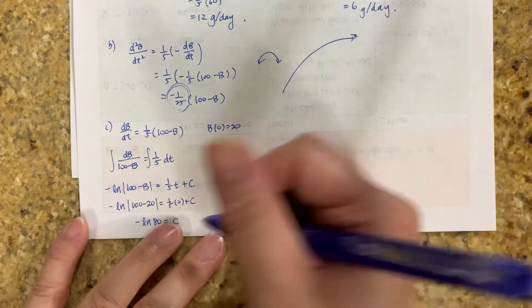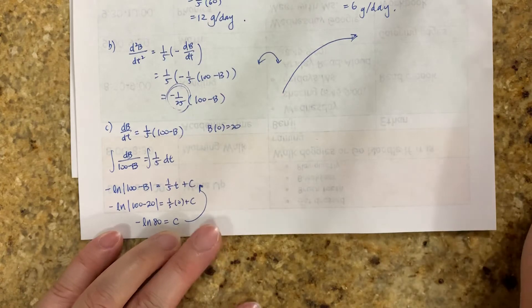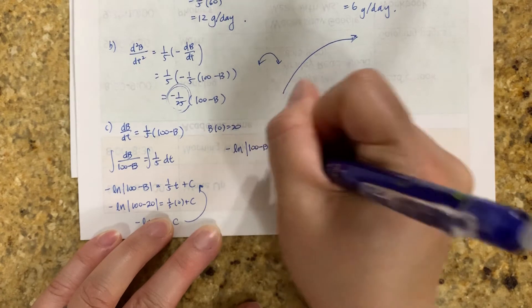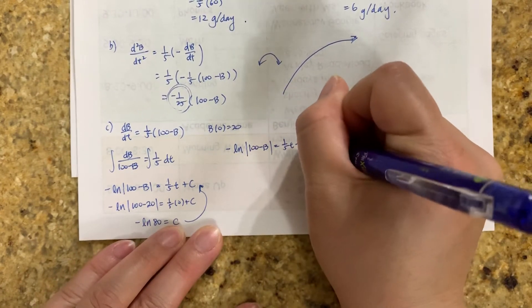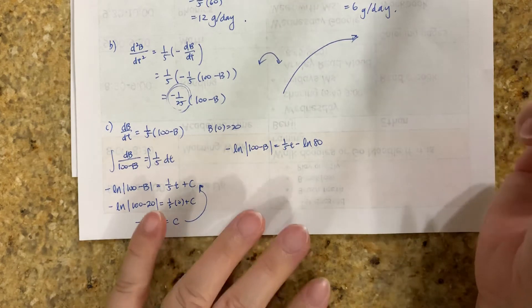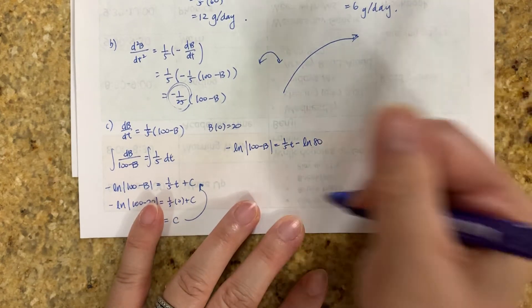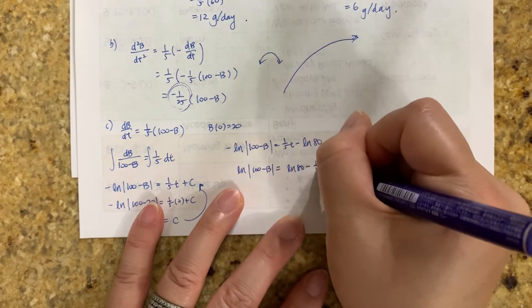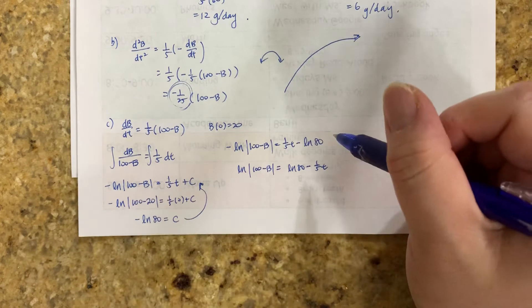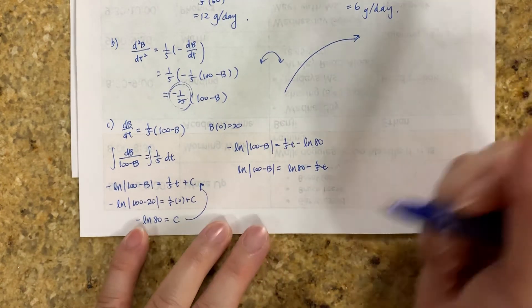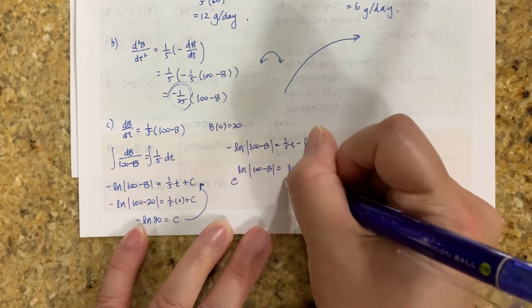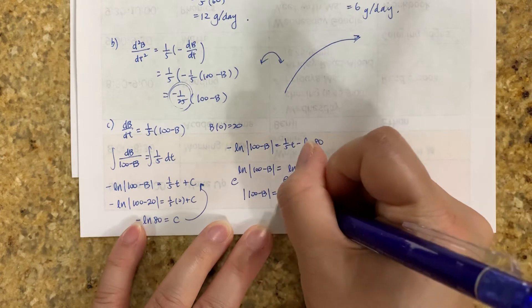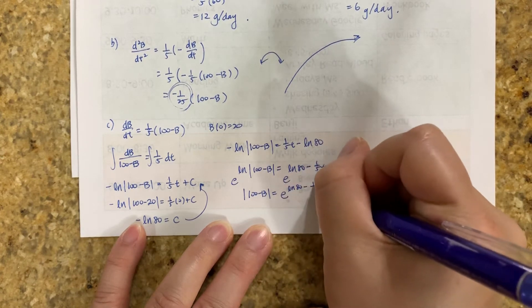So now let's plug it into that equation again. So negative natural log of 100 minus b equals 1/5 t minus natural log of 80. First things first, let's get rid of negatives. So divide everybody by a negative. That gives me natural log of 100 minus b equals natural log of 80 minus 1/5 t. If I divide everybody by a negative, this becomes positive, this is negative. Now let's do e of both to get rid of the natural log.